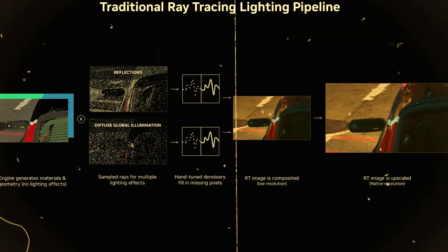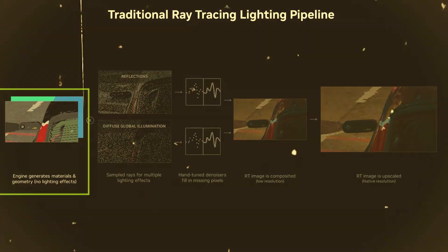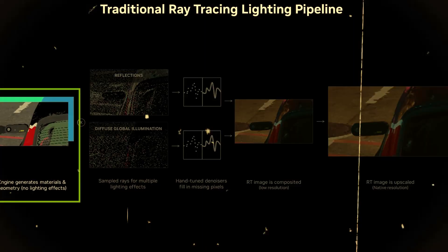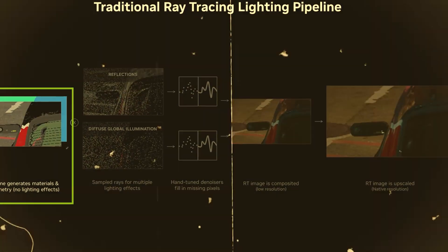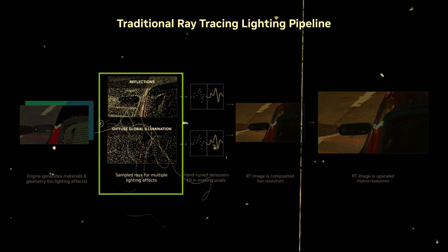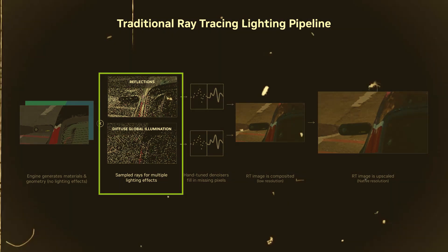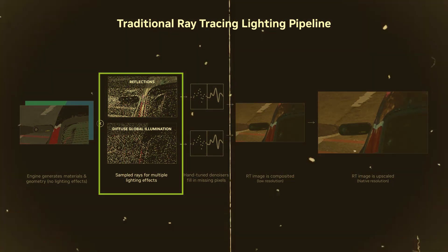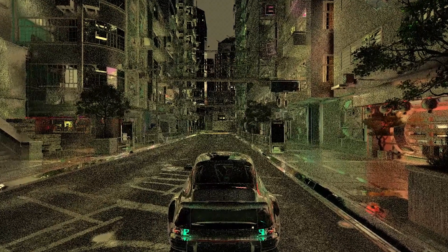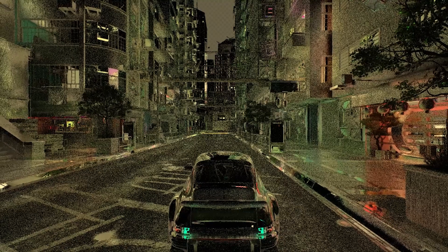We need to understand how a ray traced image is computed. The game engine has the materials and geometry for the scene, but that doesn't tell us how the scene looks because we haven't computed how all the lighting interacts with it. To compute the final image with ray tracing, we send rays into the scene to interact with the lighting and geometry. But we can never send enough rays to understand exactly how the scene looks, because there are so many pixels and the rays don't distribute themselves evenly. There are always holes in our understanding of every scene — even offline ray tracers have to deal with this problem.